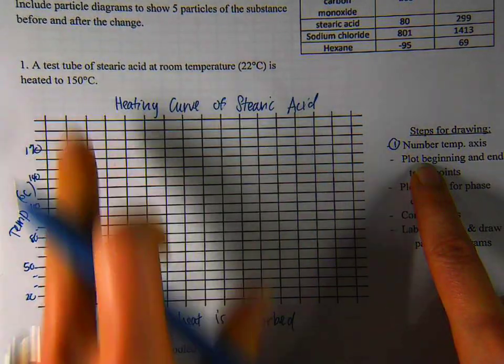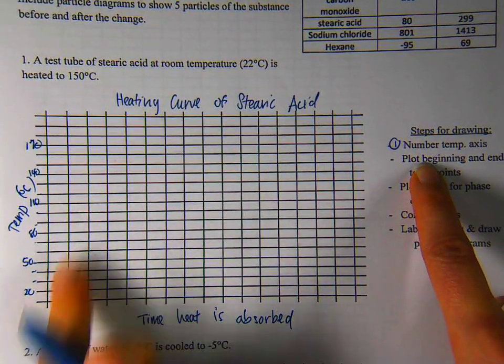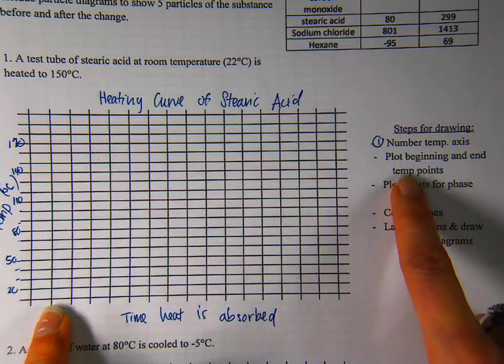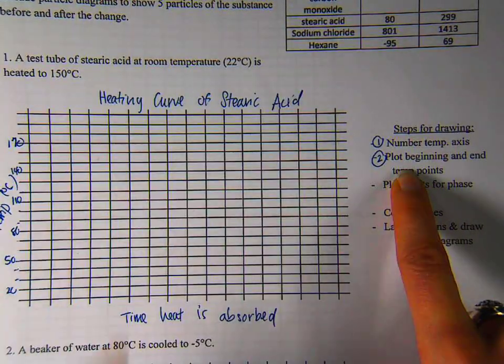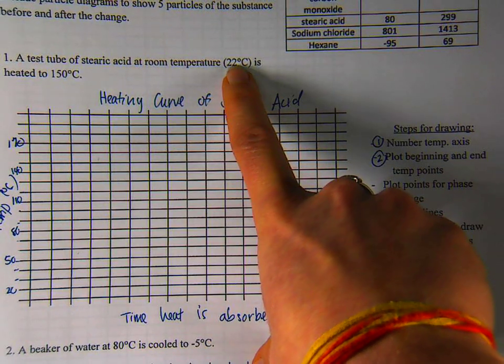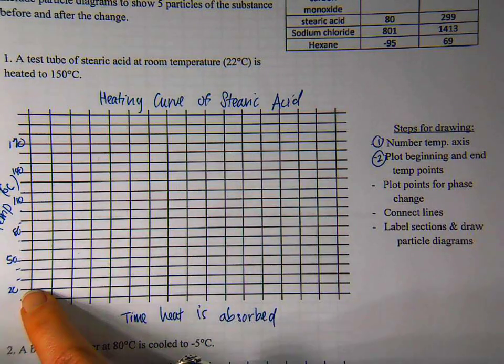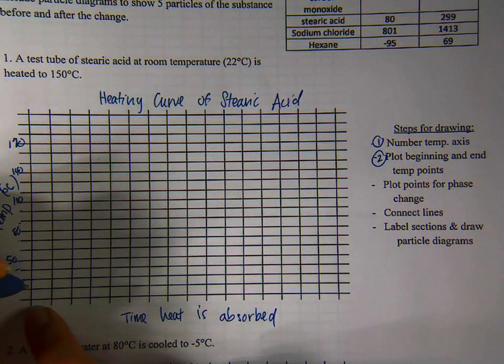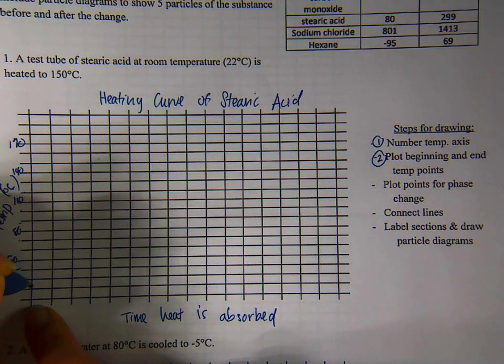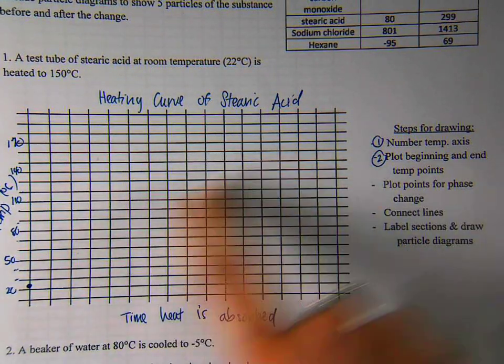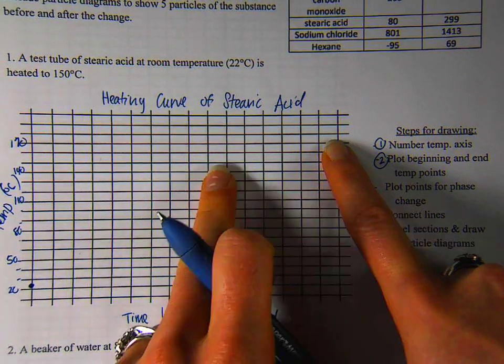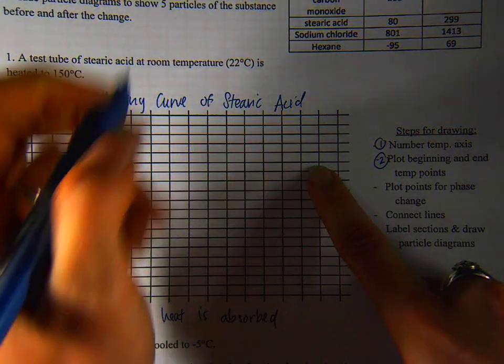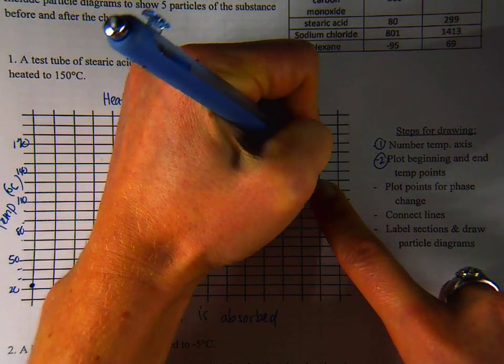I've numbered my temperature axis so that both temperatures listed are included in my numbering. Plot the beginning and the end temperature points. This is step two. So at 22 degrees Celsius, my substance is starting. So I'm going to put a dot at 22 degrees Celsius. So 22 is right around here. And then at the ending, somewhere over here after time has gone by, the substance is 150. So I'm going to put my ending point at 150.